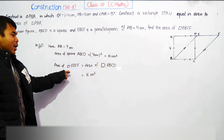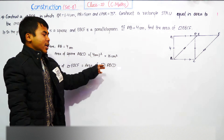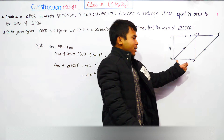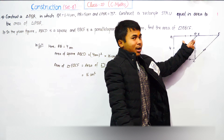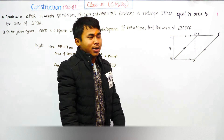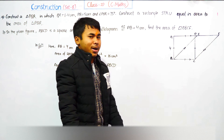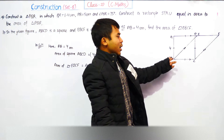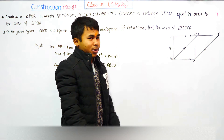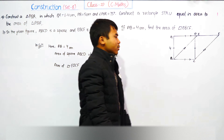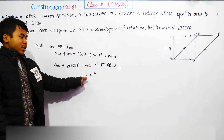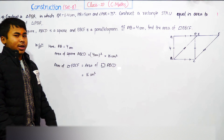The area of the parallelogram equals the area of the square because both are standing on the same base and between the same parallel lines. A square can also be considered a parallelogram — it has all right angles and all four sides equal. So the area of parallelogram EBCF comes out to 16 cm square.